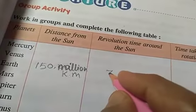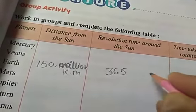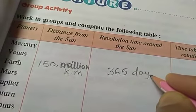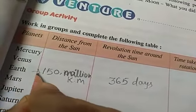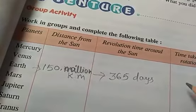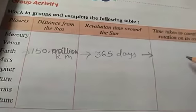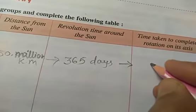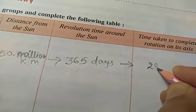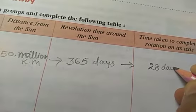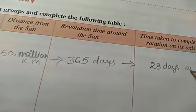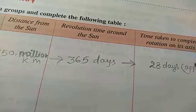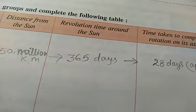Revolution time - 365 days. For Earth. You have to write properly and clearly also. Rotation - approximately 28 days. Known satellites - moon.